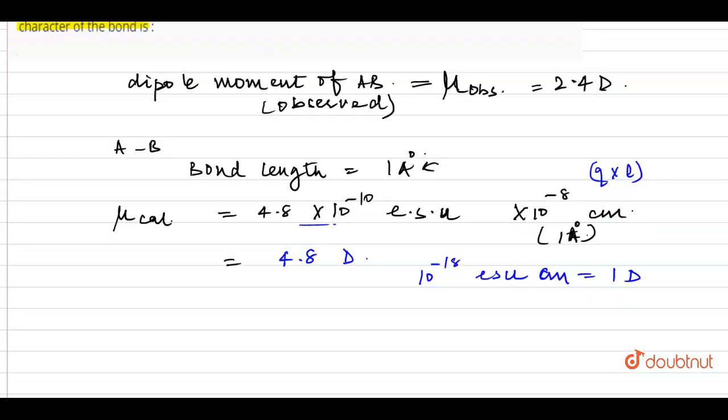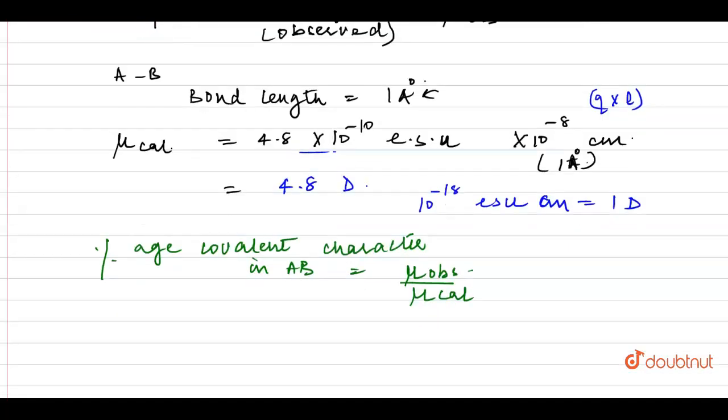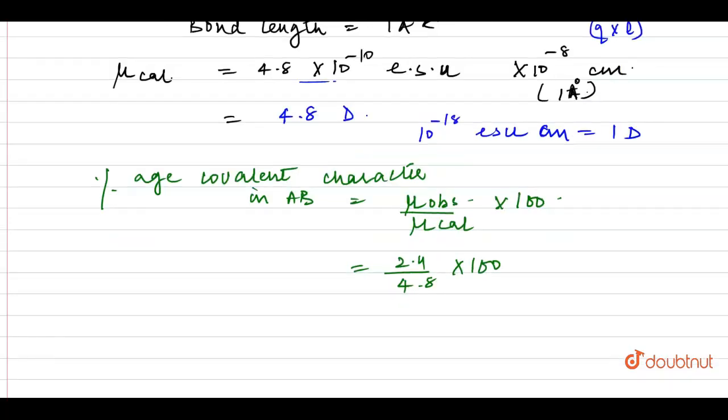What do I need to find? Percentage covalent character in AB. So what is the formula for this? Mu observed divided by mu calculated times 100. Which gives me 2.4 divided by 4.8 times 100, which is 50 percent.